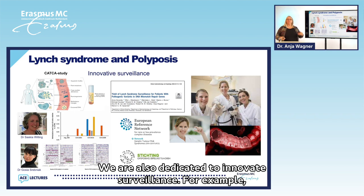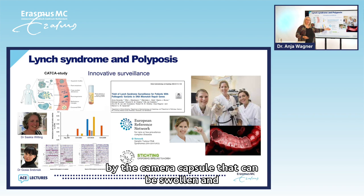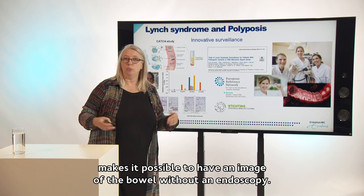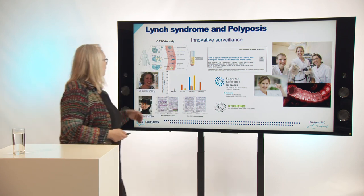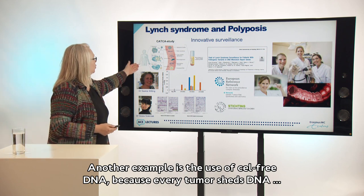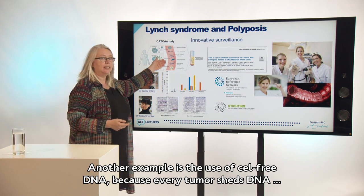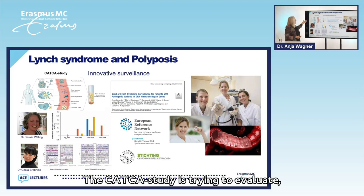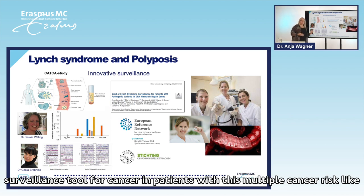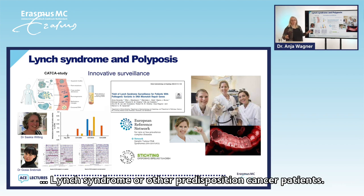We are also dedicated to innovating surveillance. For example, by the camera capsule that can be swallowed and makes it possible to have an image of the bowel without an endoscopy. Another example is the use of cell-free DNA, because every tumor sheds DNA into the blood. The KATKA study is trying to evaluate whether this cell-free DNA of the tumor can be detected and used as a surveillance tool for cancer in patients with multiple cancer risk like Lynch syndrome or other cancer predisposition syndromes, using different molecular techniques like methylation assays or chromosomal aberration assays.